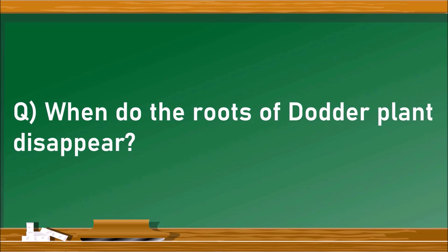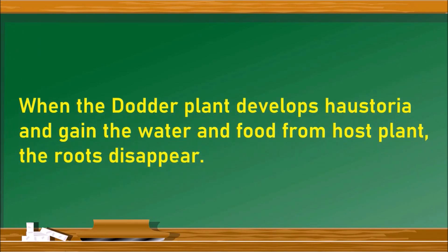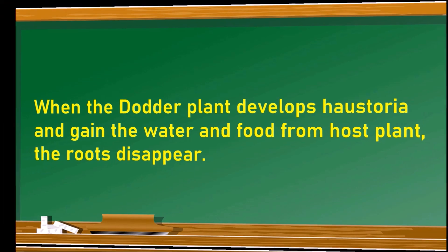The next question is: when do the roots of the daughter plant disappear? In the earlier stage, the daughter plant develops roots which penetrate into the soil to absorb water and nutrients. But when the daughter plant develops haustoria and gains water and food from the host plant, the roots disappear.